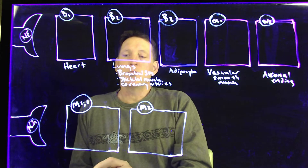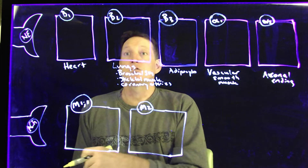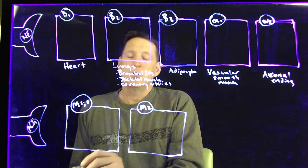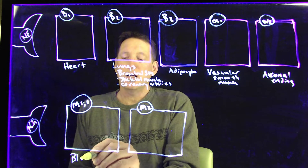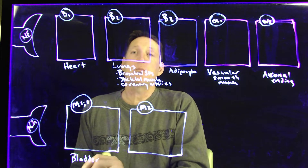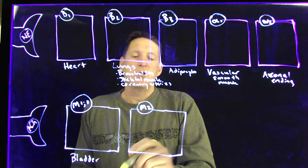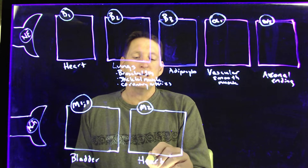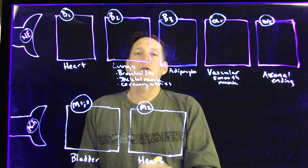M1 receptors are found in the central nervous system. M3 receptors are found throughout the body and on vascular smooth muscle; the example we'll use is the urinary bladder's detrusor muscle. One way to remember this: activation of M3 makes you pee, and also causes peristalsis. M2 receptors are found in the heart, specifically at the SA node, and activation of these receptors will decrease the rate of contraction.